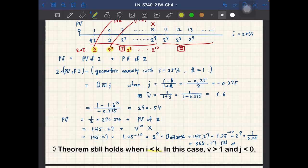So usually the future payment should be worth less at present. Otherwise the summation does not converge. So in most cases, i is larger than K. But even if i is smaller than K, the theorem still holds.